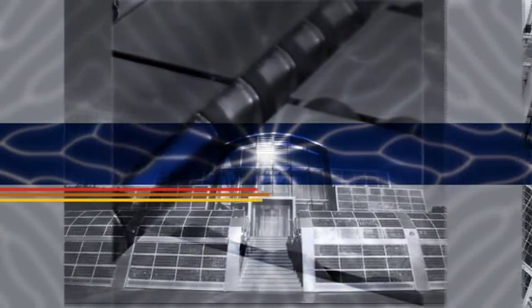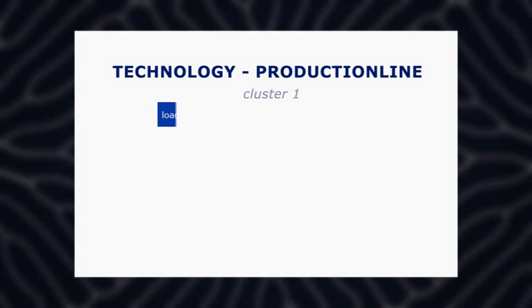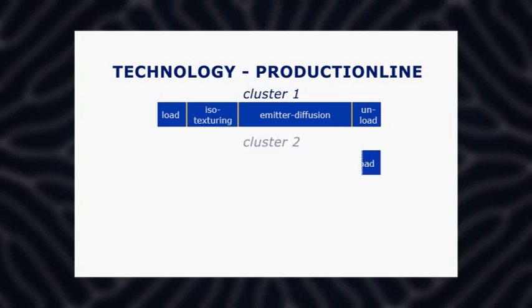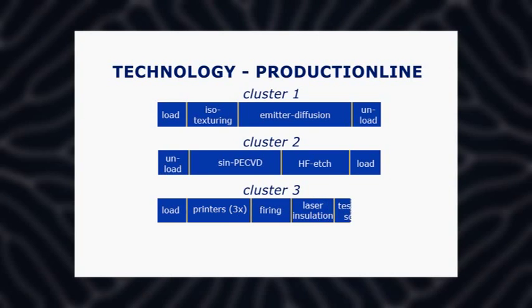Solland Solar is a manufacturer of solar cells. The base material for this solar cell is a multi-crystalline silicone wafer. This film provides an overview of the process steps from wafer to solar cell. The Solland process is a so-called semi-inline process where the production consists of three clusters.